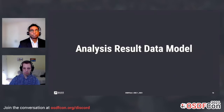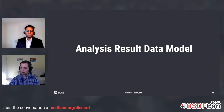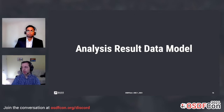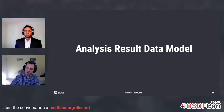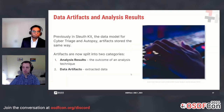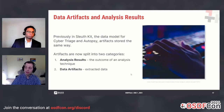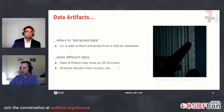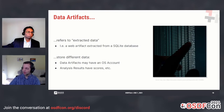Everything shown in the UI relies on how data is stored. To accommodate these new scoring and analysis result features, the Sleuthkit layer that both Cyber Triage and Autopsy use has a new analysis result type. Previously, Sleuthkit stored Blackboard artifacts the same way; now artifacts are split into two categories: analysis results, which represent the outcome of an analysis technique, and data artifacts, which represent extracted data. An example of a data artifact would be a web artifact extracted from a SQLite database.